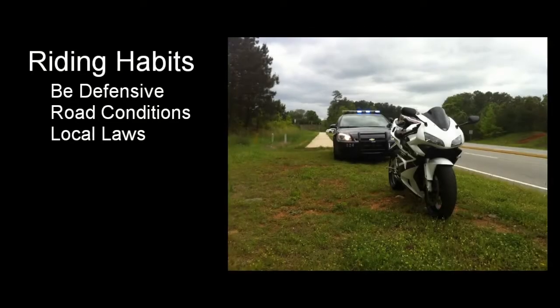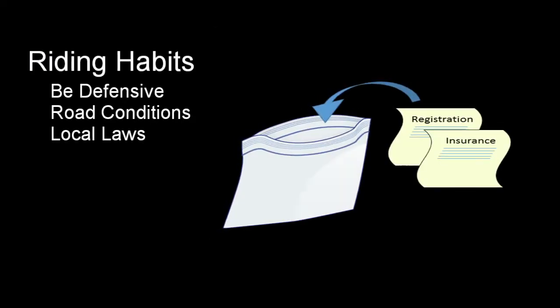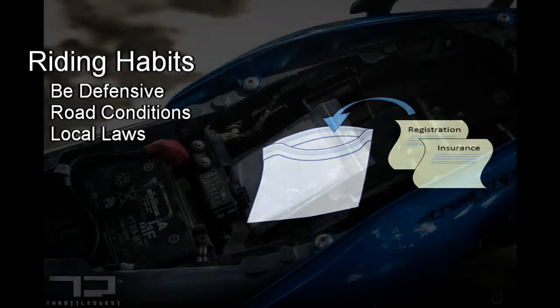As a brief side note, remember to keep your registration and proof of insurance with you when you ride. Since you probably don't have a glove box on your bike, you probably want to put it in a plastic baggie and store it under the seat.